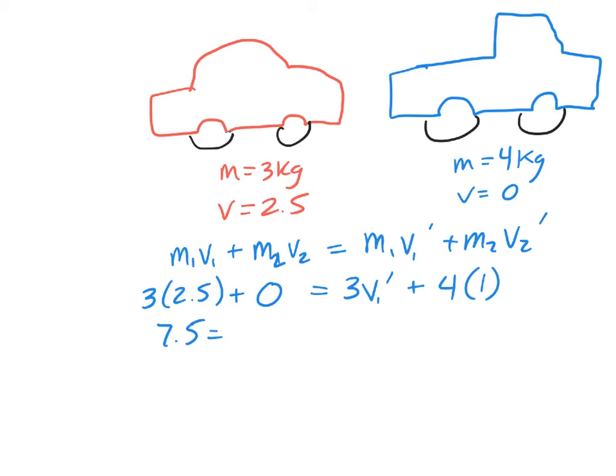So 3 times 2.5 is 7.5, and we end up with 3V1 plus 4. Now we're going to subtract 4 from both sides.